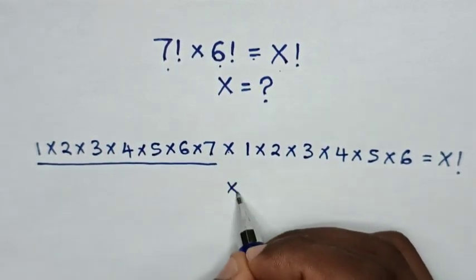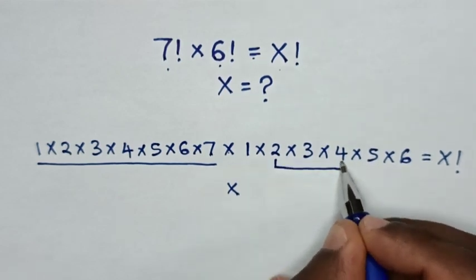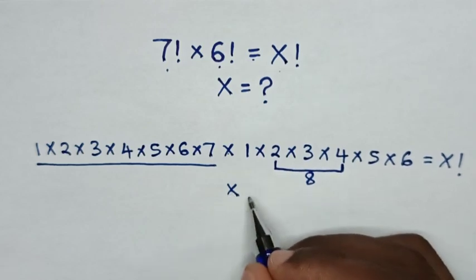Then, times to get 8 is multiplication of 2 times 4, which is 8. So, here to be times 8.